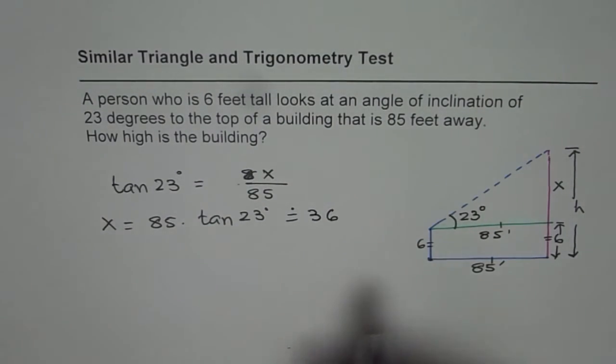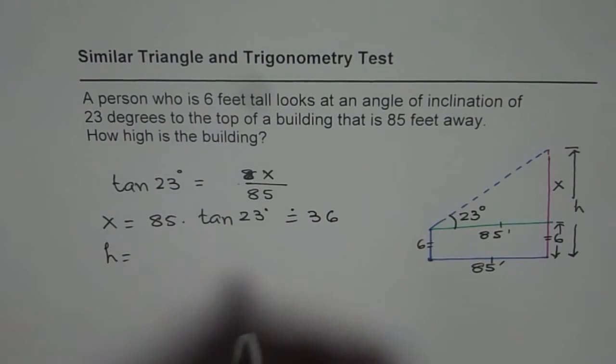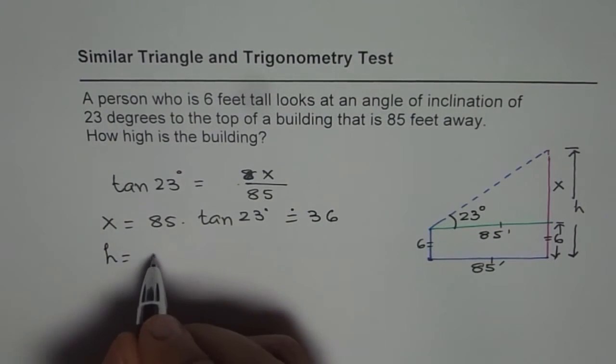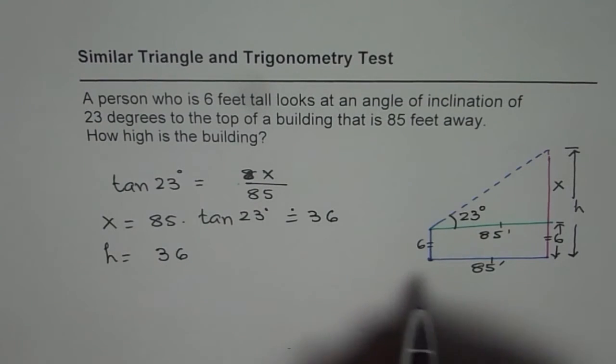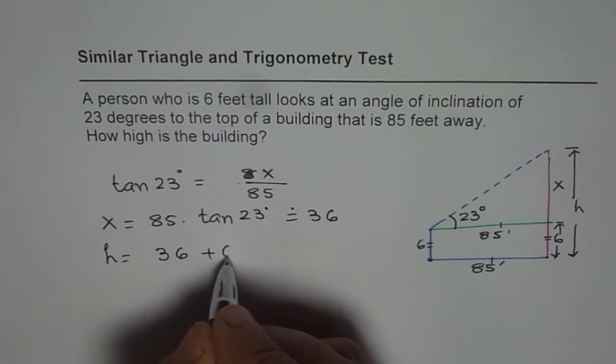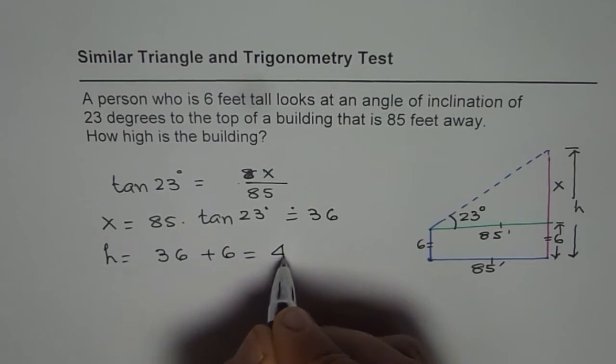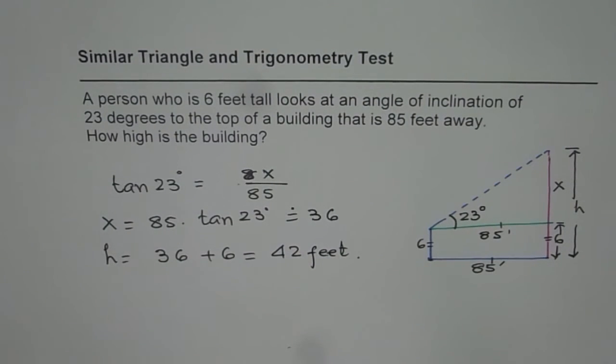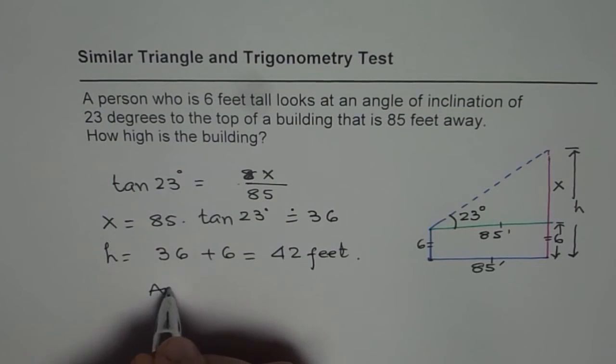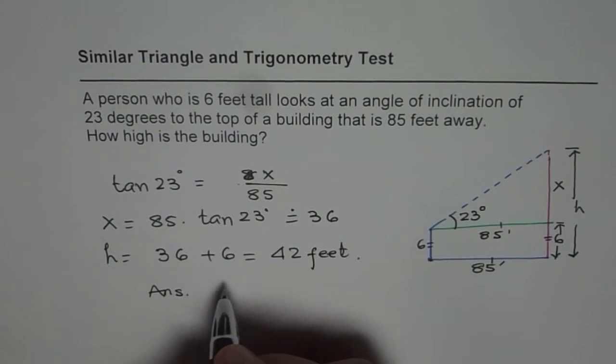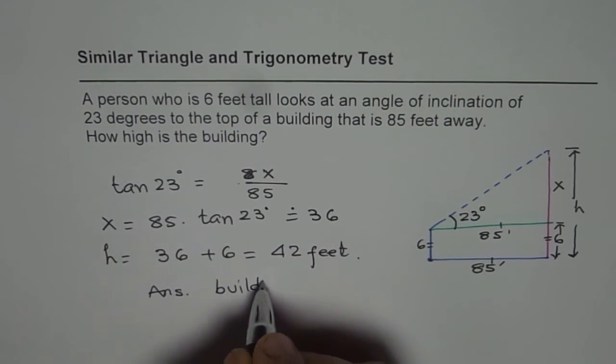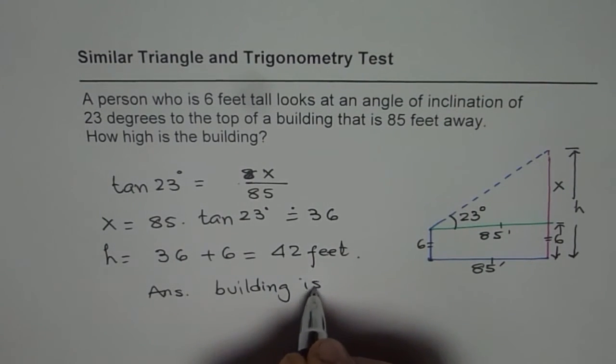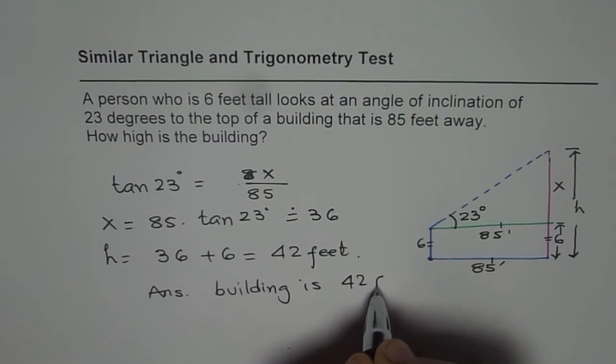Now the height of the building will be equals to 36 plus 6 and that is 42. 42 feet. So always include units in your answer and write down the answer clearly. That is the building is 42 feet high.